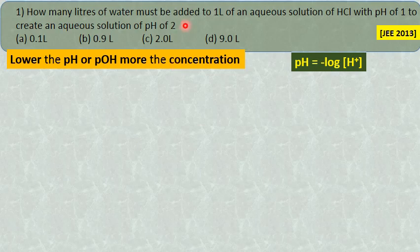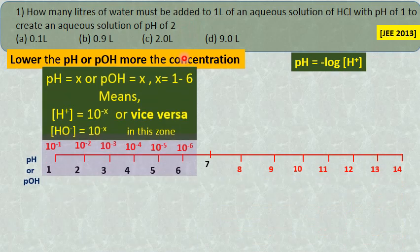To tell the answer for this, I have a simple shortcut method. Take this chart — the pH and POH chart of 1 to 14.